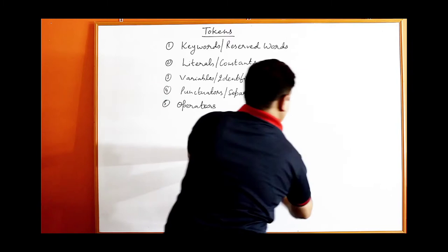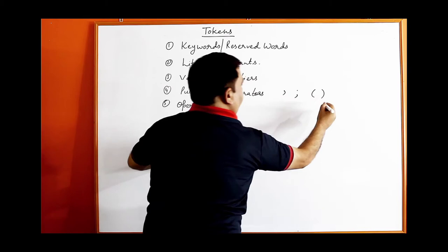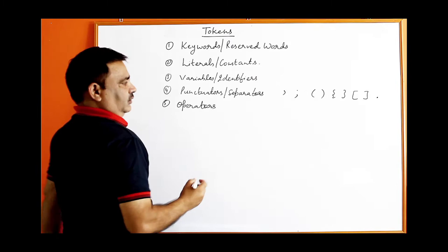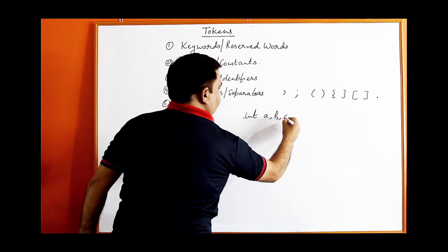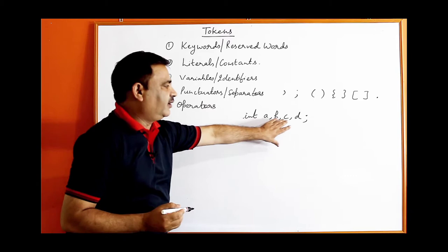The next token is punctuators or separators. Punctuators include: comma, semicolon, round bracket, curly bracket, square bracket, and dot. For example: int a, b, c, d — we can declare any number of variables but they must be separated by comma, and the complete statement must be terminated by a semicolon.